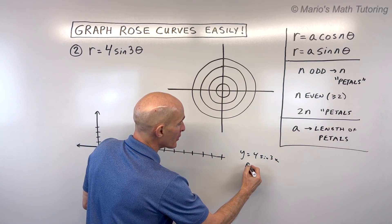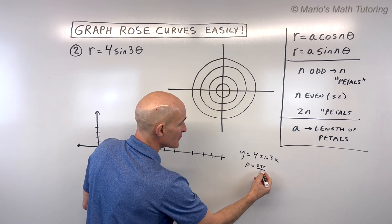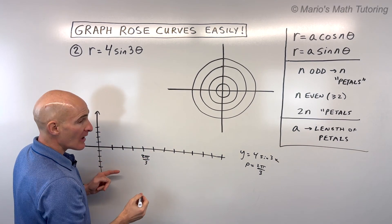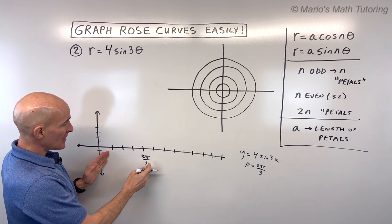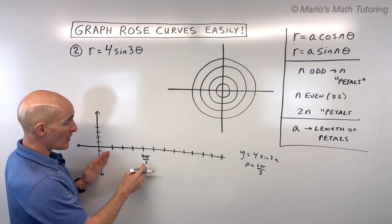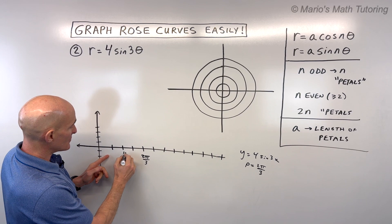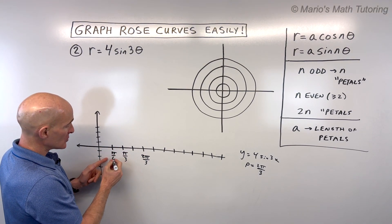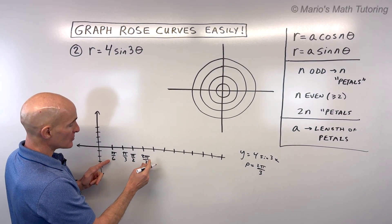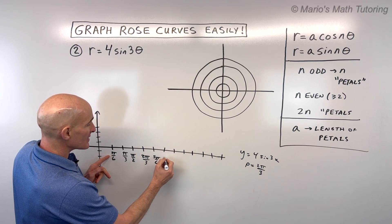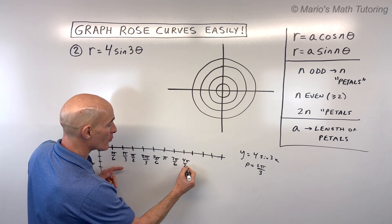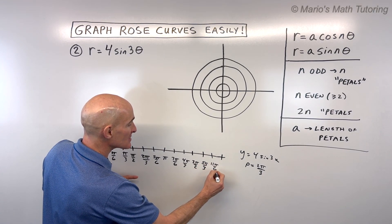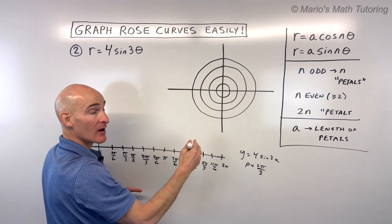To help graph it, we'll look at y equals 4 sine 3x in the Cartesian plane. The period equals 2π divided by the b value of 3, giving a period of 2π/3. One-fourth of the period is π/6, so our scale goes: π/6, 2π/6, 3π/6 which is π/2, 4π/6, 5π/6, 6π/6 which is π, 7π/6, 8π/6 which is 4π/3, 9π/6 which is 3π/2, 10π/6 which is 5π/3, 11π/6, and 12π/6 which is 2π.